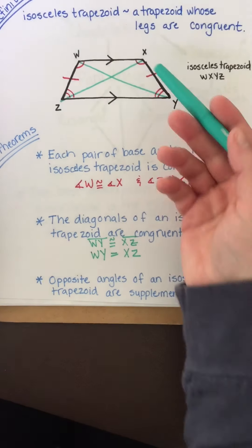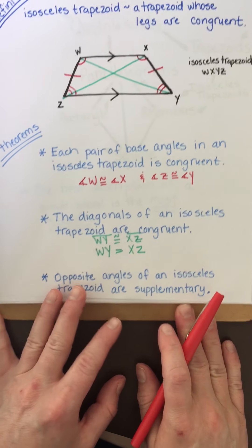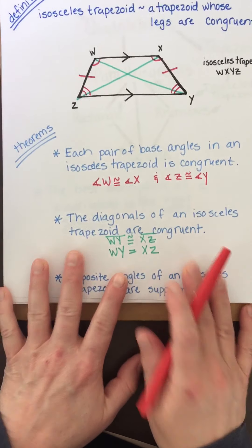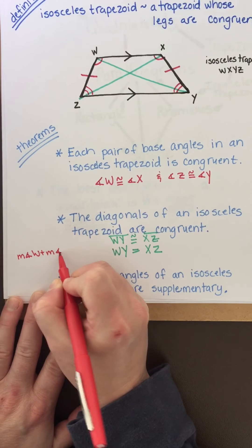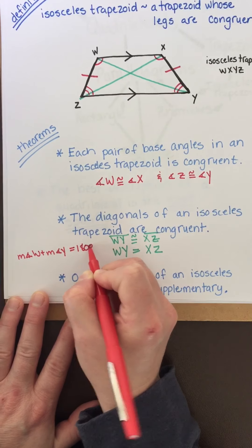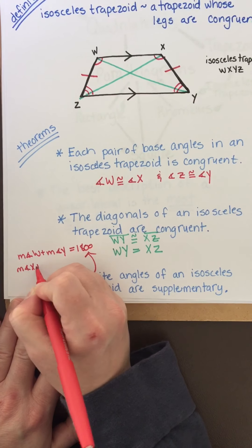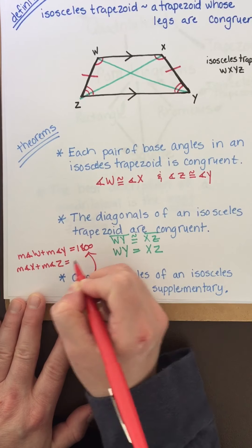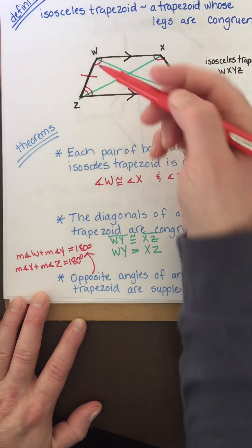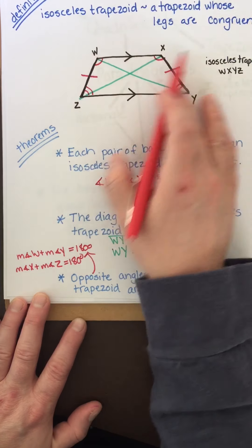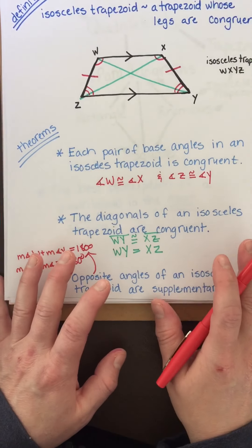According to this theorem, opposite angles are also supplementary. So the measure of angle W plus the measure of angle Y equals 180 degrees because they're opposite angles. Keep in mind that the same side interior angles created by these parallel lines and transversals are also supplementary. Let's do some examples.